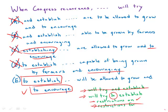Notice that answer E has a nice direct phrase: 'will be allowed to grow,' as opposed to the monstrosity in D: 'capable of being grown by farmers' — a horrible, indirect construction. Answer E is direct, sleek, free of grammatical errors, and is by far the best answer choice.